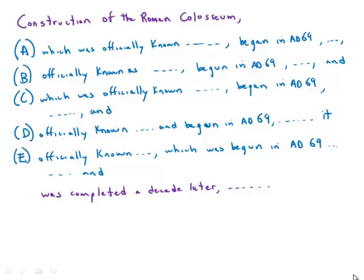This question about the Roman Colosseum is an extended exercise in parallelism — one of the GMAT's favorite constructions. Here we have to have parallelism between the two verbs: we have the subject 'construction' and we have 'begun'.